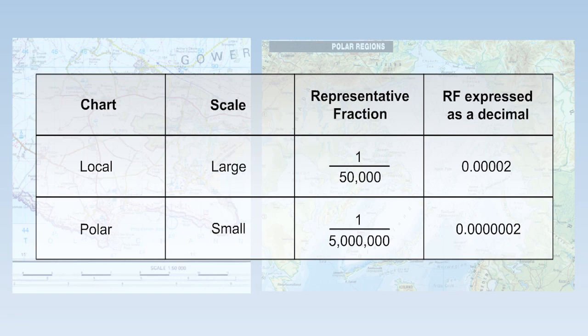A fraction of 1 to 5 million, expressed as a decimal, is 0.0000002.